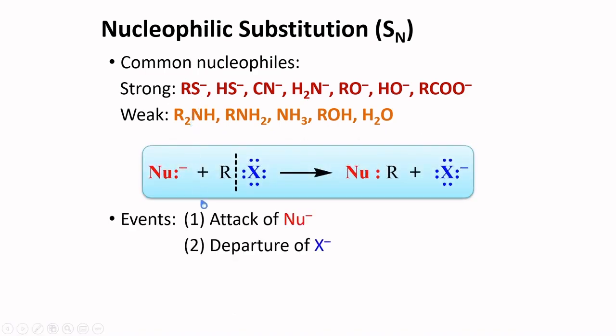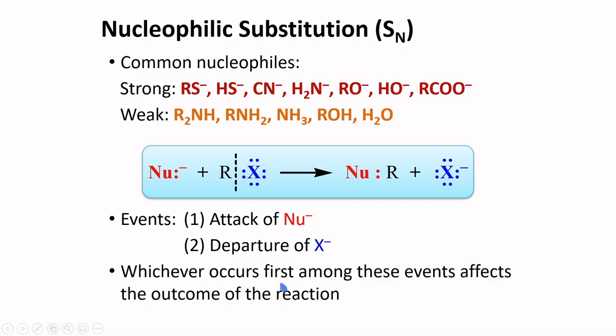In nucleophilic substitution, two events occur. The attack of the nucleophile to the electron-deficient atom, and the departure of X, the leaving group. Whichever occurs first among these events affects the outcome of the reaction.